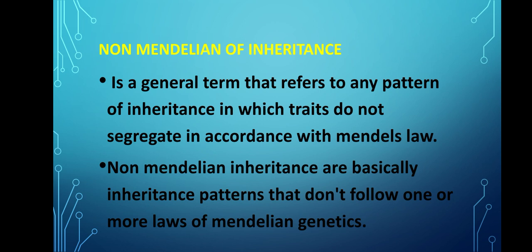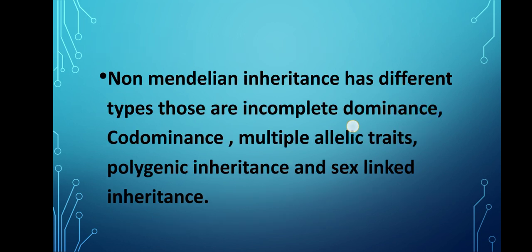Non-Mendelian inheritance is a general term that refers to any patterns of inheritance in which traits do not segregate in accordance with Mendel's Laws. Non-Mendelian inheritance patterns do not follow one or more laws of Mendelian genetics. These laws describe the inheritance of traits linked to single genes and chromosomes in the nucleus. Non-Mendelian inheritance has different types: incomplete dominance, codominance, multiple allelic traits, polygenic inheritance, and sex-linked inheritance.